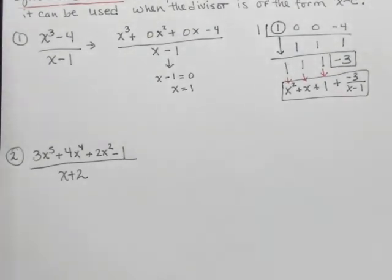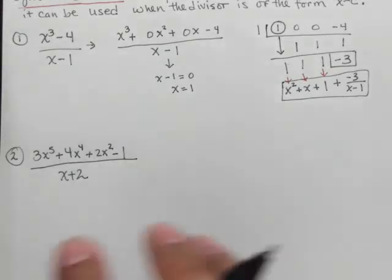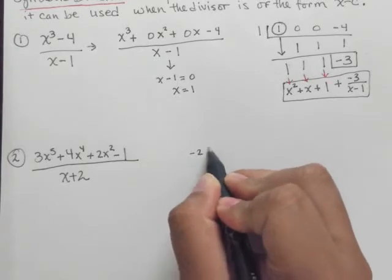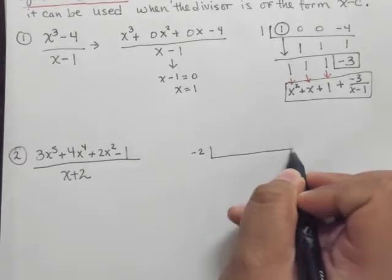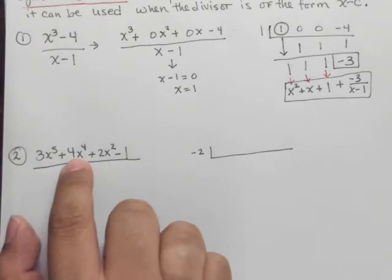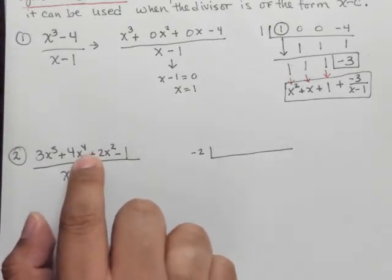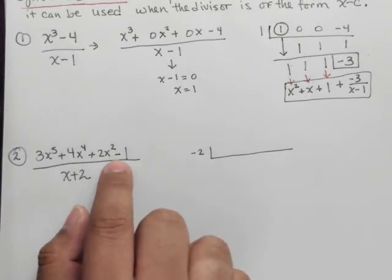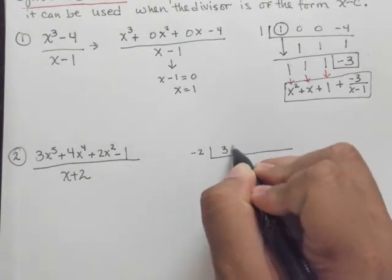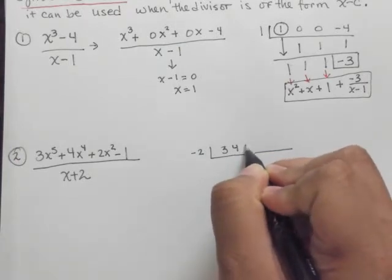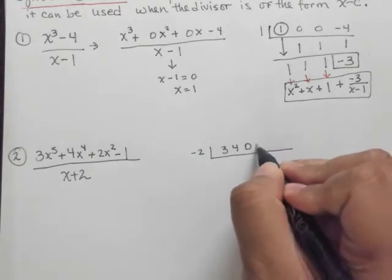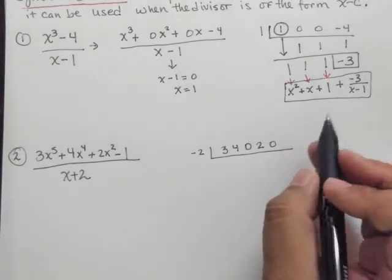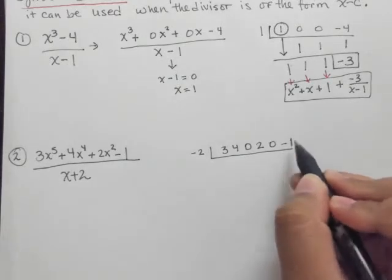Another example of synthetic division. So again, we take the opposite of this denominator, and we can write it out like this, negative 2. And notice we've got x to the 5th, x to the 4th, we're missing an x cubed, so we're going to need to fill in a 0, and we're missing an x term, so we're going to need to fill in a 0. So we're going to put 3, we're going to put 4, we're going to put 0 for the missing x cubed, we're going to put 2 for the x squared, we're going to put 0 for the missing linear term, the x term, and then we'll put negative 1.